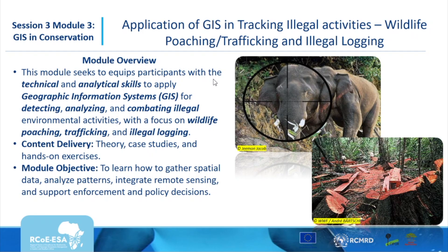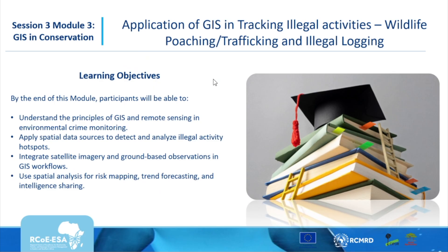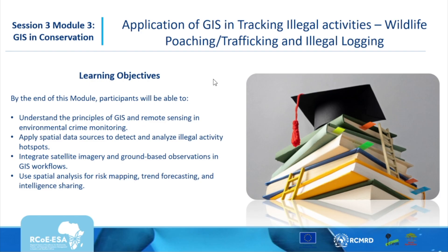The objective of the module is to help you understand how to gather spatial data, analyze patterns, and integrate remote sensing activities to ensure we are making informed decisions and supporting enforcement activities on the ground. By the end of this module, participants will understand the principles of GIS and remote sensing, apply spatial data to detect and analyze illegal activities by mapping hotspot areas, and integrate satellite data and ground-based observations into GIS to generate analytics and share intelligence on wildlife hotspots and illegal logging activities.